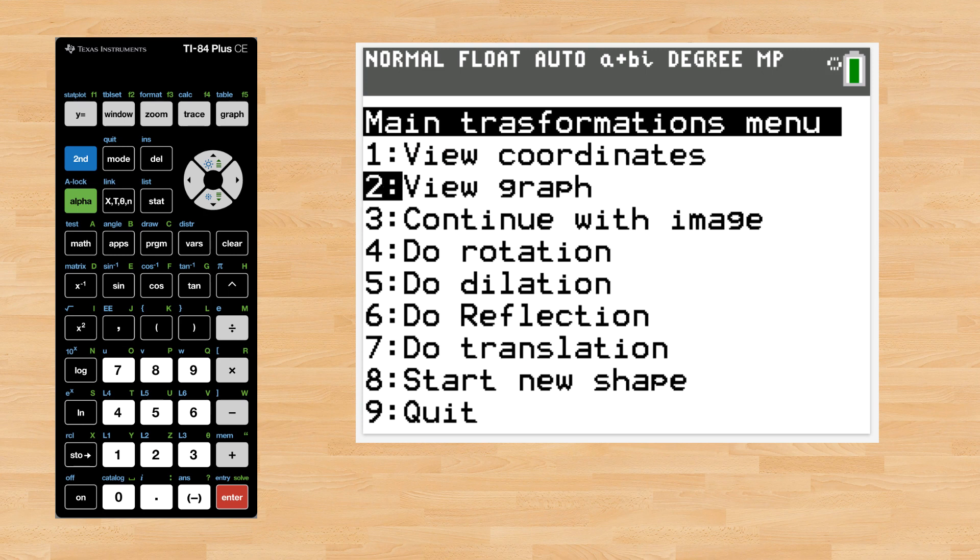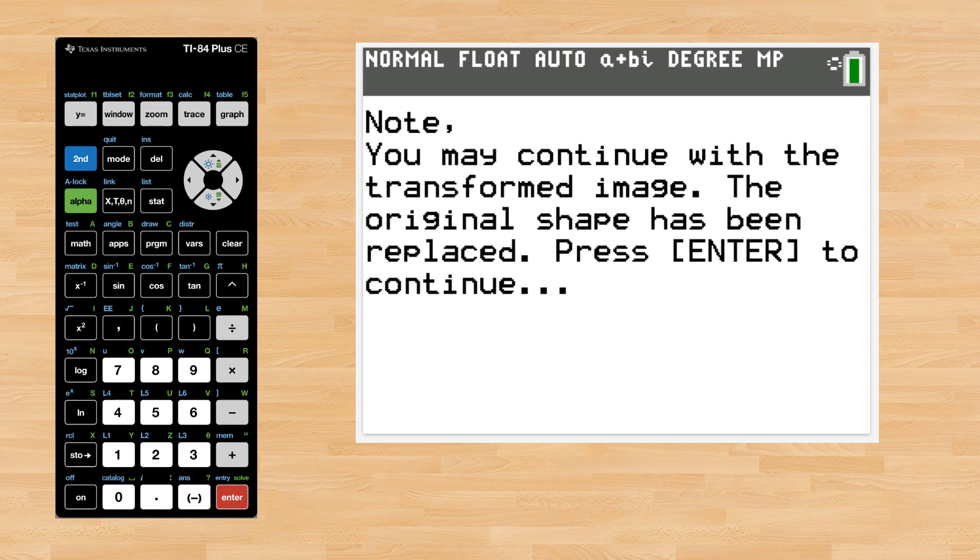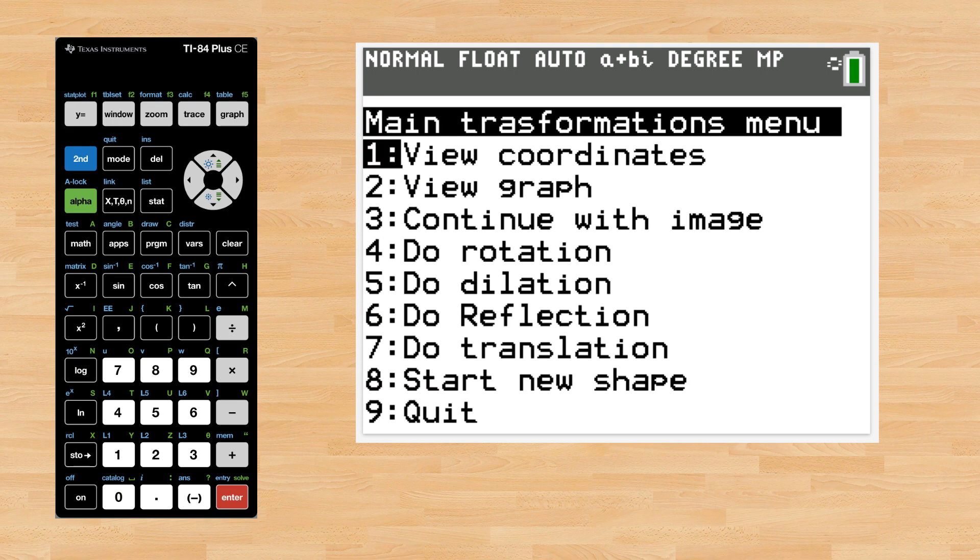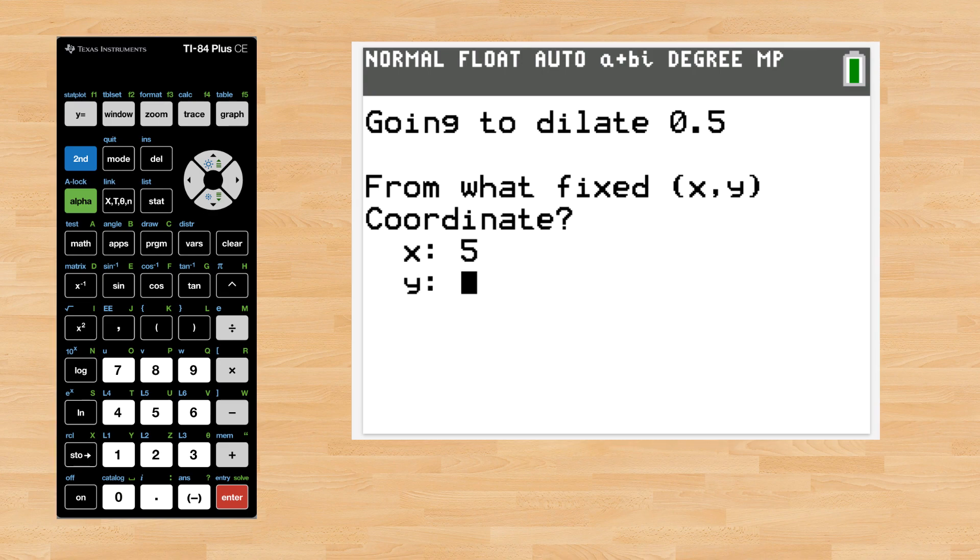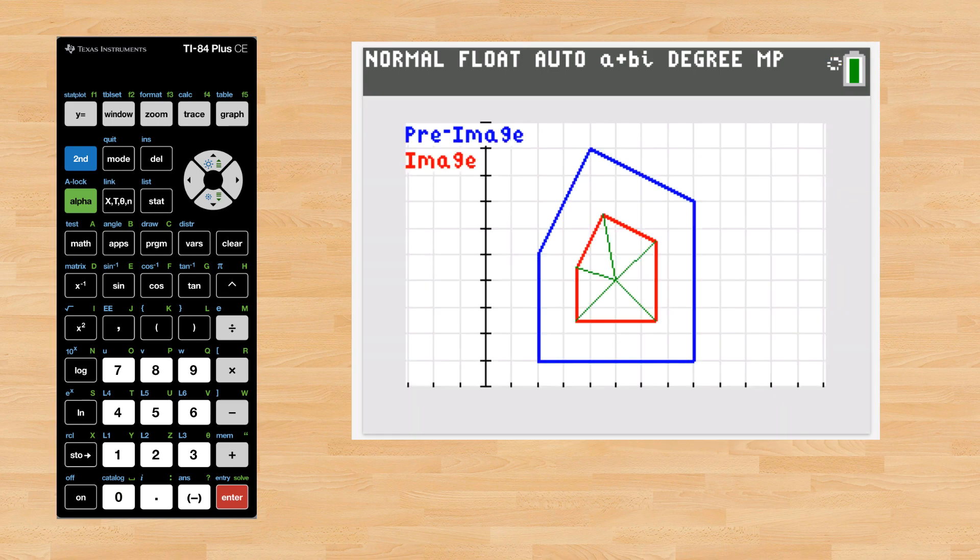Composing multiple transformations is easy. From the main menu choose option number 3, continue with the image, and apply another transformation. This time let's try a dilation of 0.5 from a center of 5, 5. Graph and coordinates.